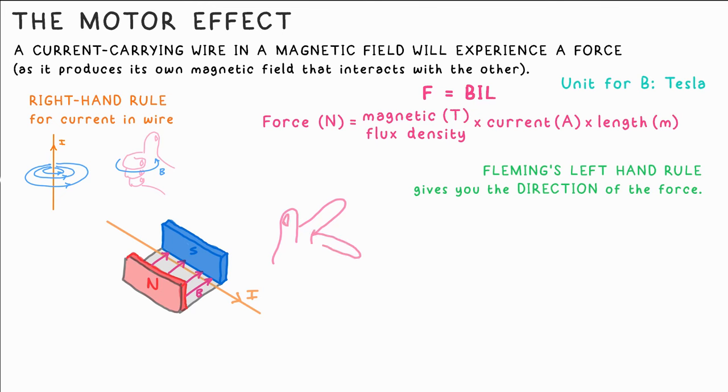To find out the direction of the force on the wire we use Fleming's left-hand rule. Your thumb is force, first finger is field, middle finger is current. Make a janky gun with them where they are all perpendicular. Just twist your wrist to line up your fingers with the current and the field, always north pole to south pole, and the way that your thumb is pointing is the direction of the force on the wire.